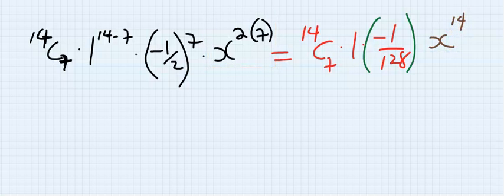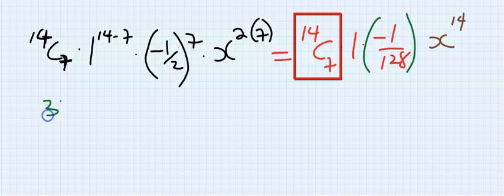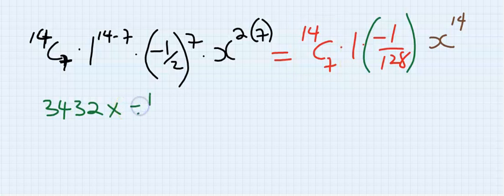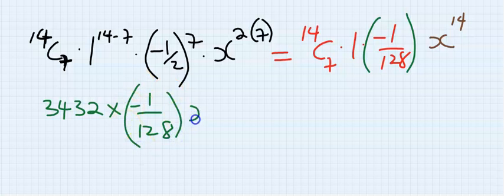Solving this further, you're going to have 14C7 will give you 3432, multiply -1 over 128, in brackets x to the power of 14.